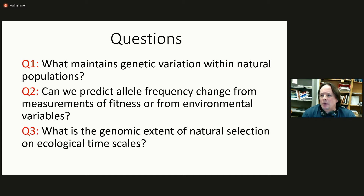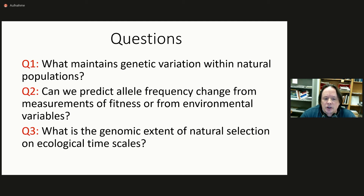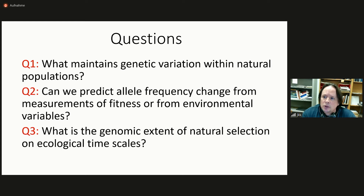My interest in this is variable, but we can organize a lot of the work around three questions. The long-term interest of my lab is what maintains genetic variation within natural populations. My interest is mostly in quantitative trait variation, particularly things that relate to lifetime reproductive success. The second question is: can we predict allele frequency change at SNPs across the genome from measurements of fitness or from environmental variables that drive natural selection? In other words, to what extent can we do in population genetics what is common in quantitative genetics? And finally, what is the genomic extent of natural selection on ecological time scales — how much of the genome is under selection of an intensity we can actually measure at the scale of one to ten generations?